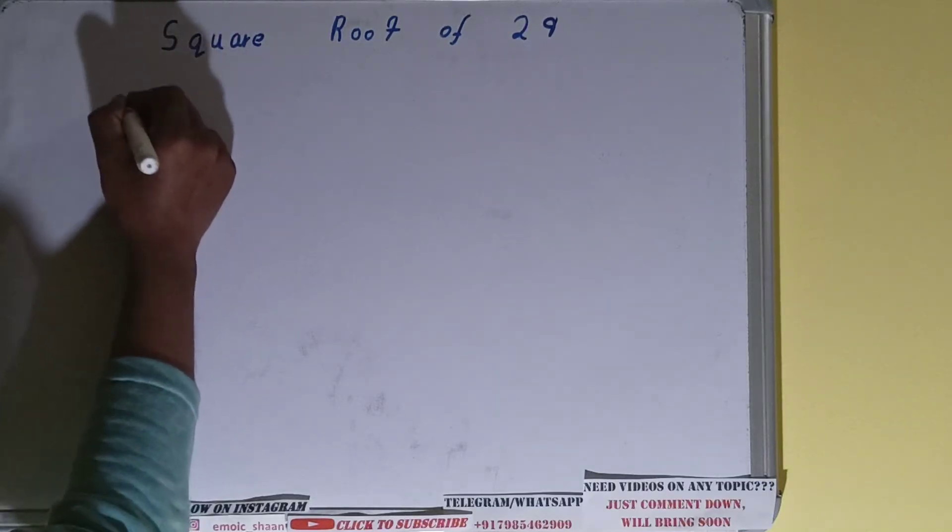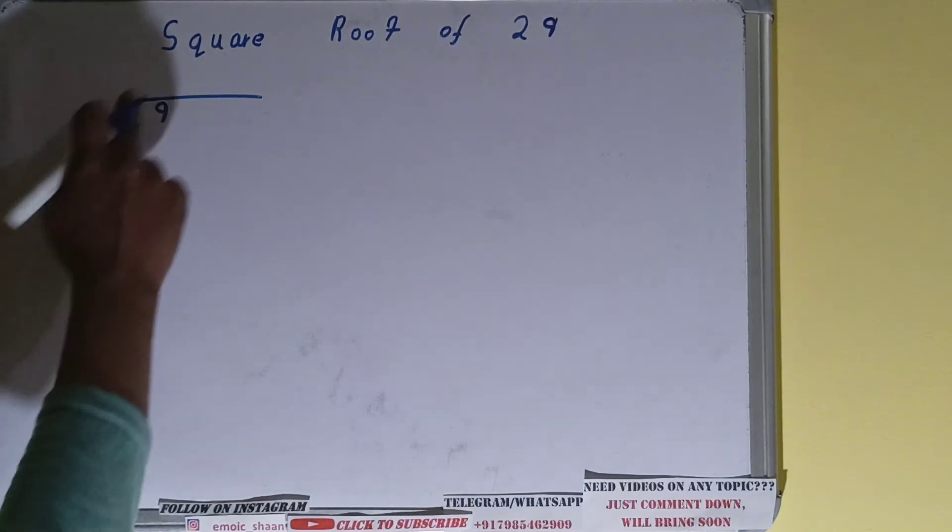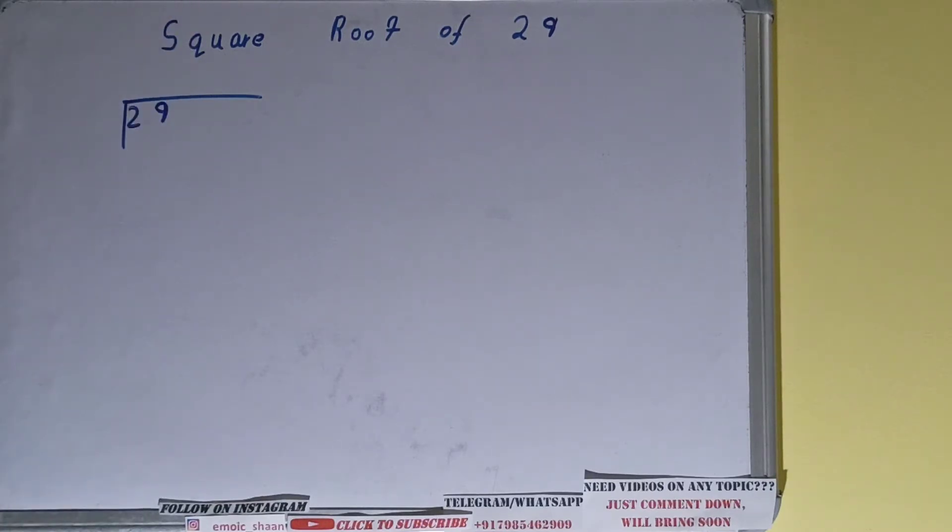First we need to write the number 29 like this. The next thing we need to do is whatever divisor we take here, we have to take it as a quotient also. So let's say we take 5 here, we have to take 5 here also, which will give the value as 25.